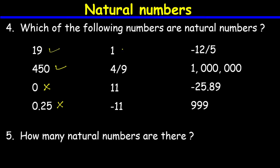1 is a natural number. 4 over 9 is not a natural number because it is a fraction, and natural numbers do not include fractions. 11 is a natural number. Negative 11 is not a natural number because negative numbers are not natural numbers. Negative 12 over 5 is not a natural number because it is both negative and a fraction.